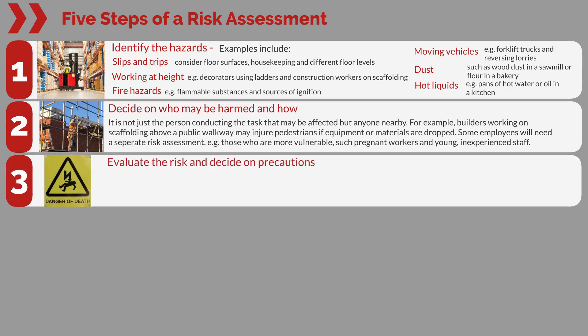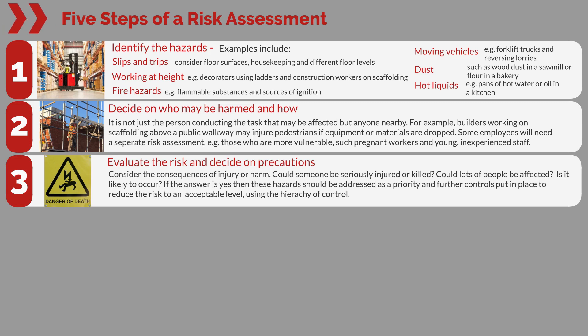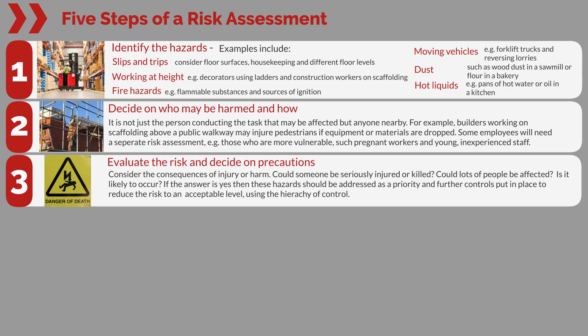Step three: evaluate the risk and decide on precautions. Consider the consequences of injury or harm. Could someone be seriously injured or killed? Could lots of people be affected? Is it likely to occur? If the answer is yes, then these hazards should be addressed as a priority and further controls put in place to reduce the risk to an acceptable level, using the hierarchy of control.